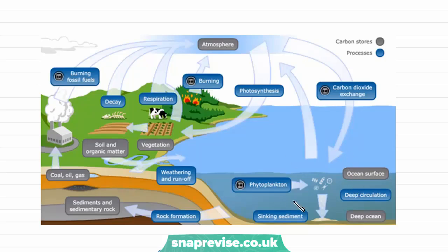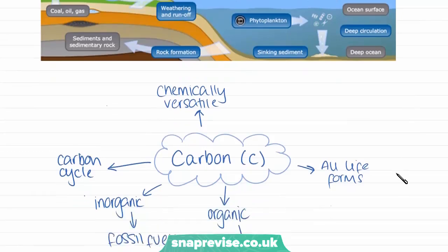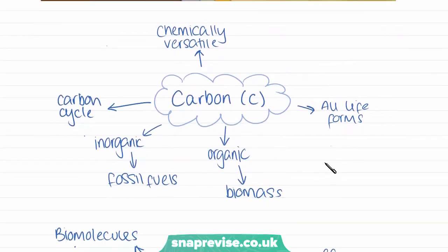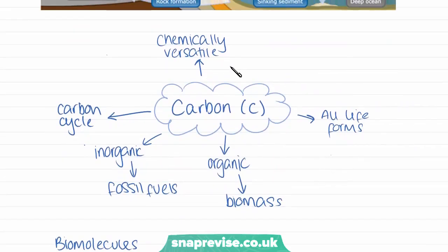The stores include the ocean, the land, beneath the land — which is called the lithosphere — and also the atmosphere. There are a variety of processes that transfer carbon as an element between these different stores. Carbon is one of the most chemically versatile elements on Earth, meaning it forms a variety of compounds more than most other elements, and it's also present in all life forms. It's cycled through the Earth via the carbon cycle.